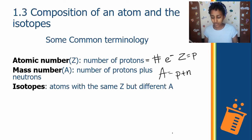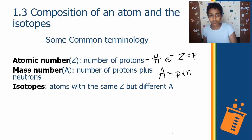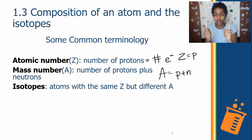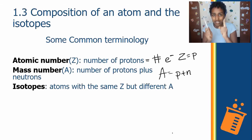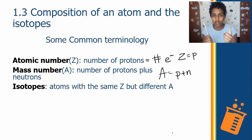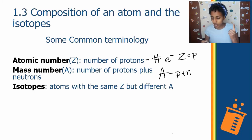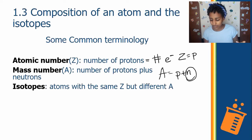Look back at the formulas we just wrote: atomic number is the number of protons, and mass number is protons plus neutrons. If two atoms have the same atomic number, they are technically the same element. For them to have the same atomic number but different mass numbers, the only way that's possible is if they have a different number of neutrons.